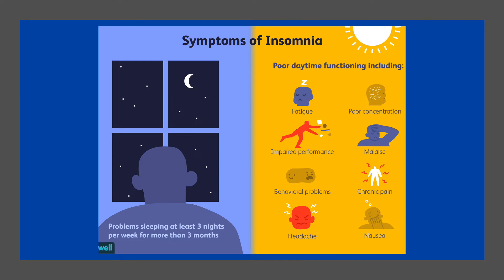The sleep diary includes the time to go to bed, total sleep time, time to sleep onset, number of awakenings, use of medications, time of awakening, and subjective feelings in the morning. The diary can then be replaced or validated by the use of outpatient actigraphy for a week or more, using a non-invasive device that measures movement.